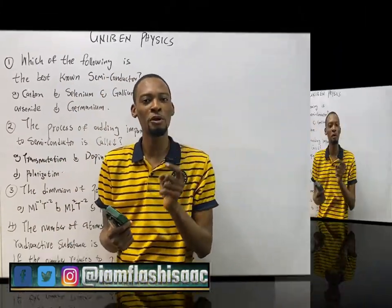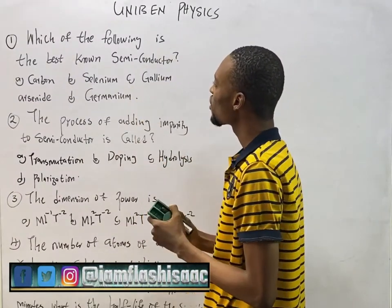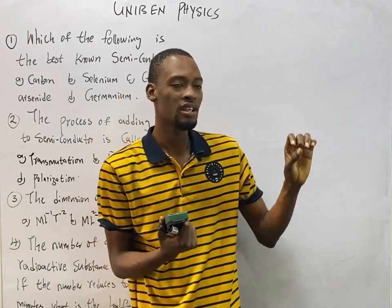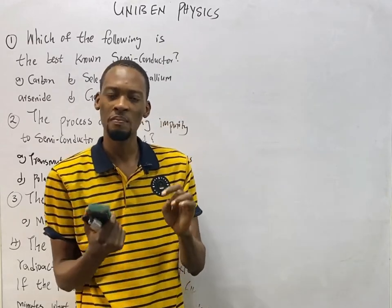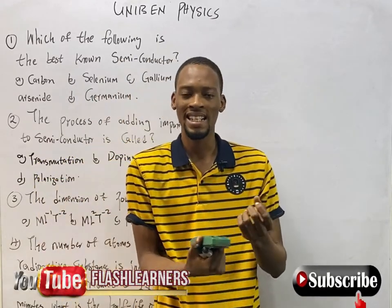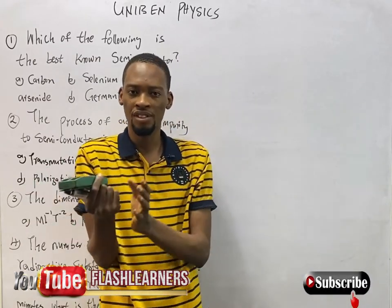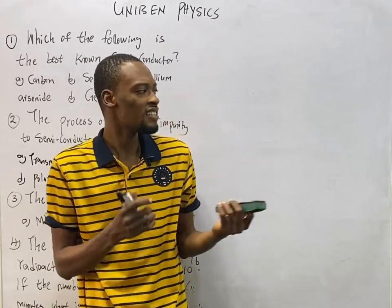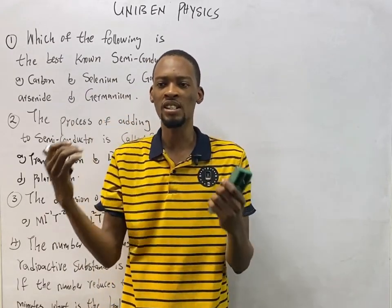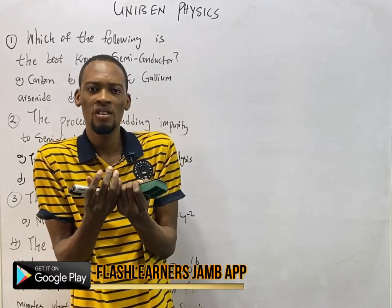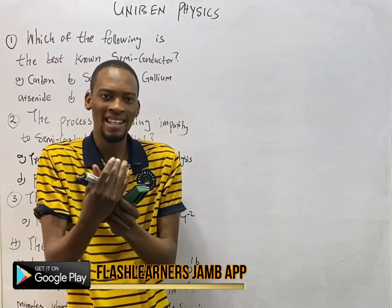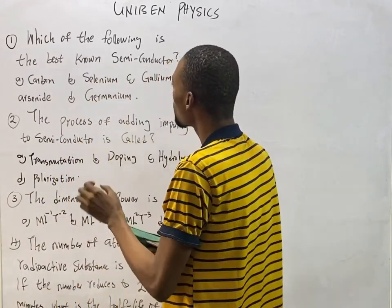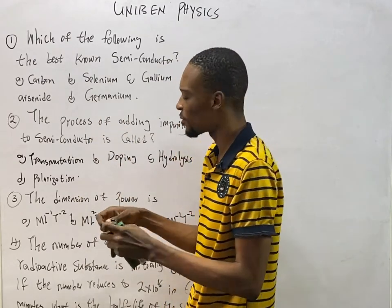The first question asks which of the following is the best known semiconductor. In physics, a material can either be a conductor, insulator, or semiconductor. Conductors allow the flow of current easily with lower resistance. Insulators don't allow current flow. Semiconductors are in between — they allow current to pass, and their conductivity is not as high as that of conductors.